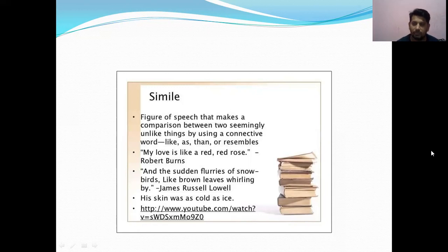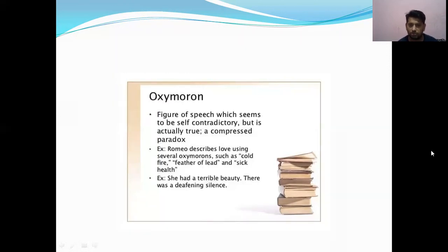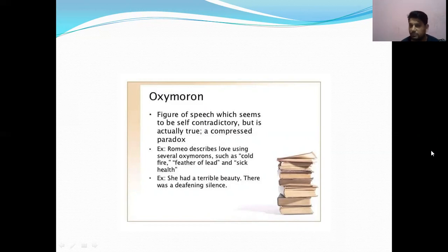Next is oxymoron — a figure of speech that seems self-contradictory but is actually true; a compressed paradox. For example, Romeo described love using several oxymorons such as 'cold fire,' 'feather of lead,' and 'sick health.' Another example: 'She had a terrible beauty' and 'There was a deafening silence.' These are good examples of oxymoron.